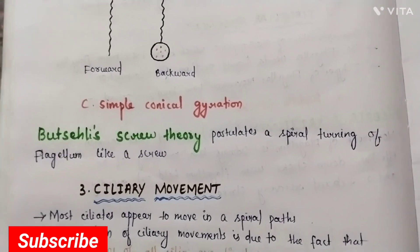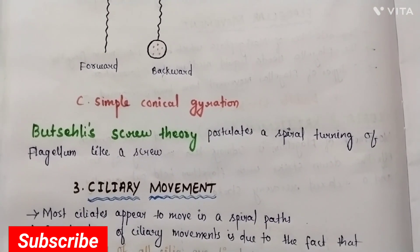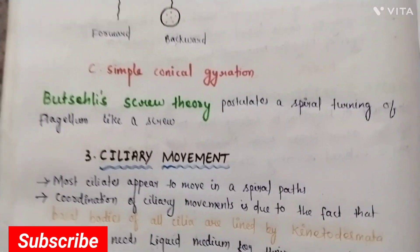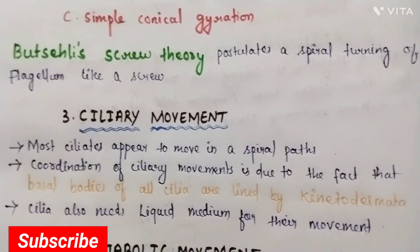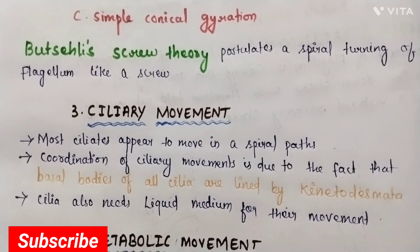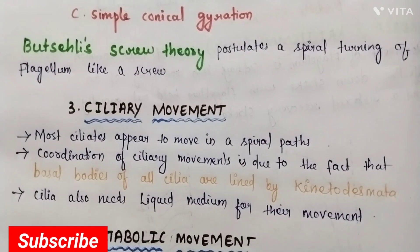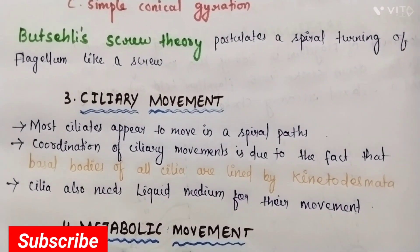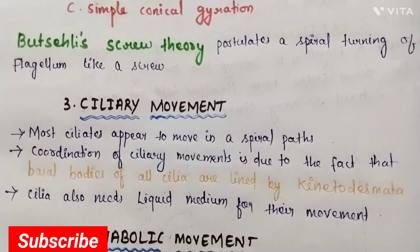Simple conical gyration: the screw theory postulates spiral turning of the flagellum like a screw. Ciliary movement: most ciliates appear to move in a spiral path. Coordination of ciliary movement is due to the fact that basal bodies of cilia are lined by kinetodesmatas. Cilia also need a liquid medium for their movement.